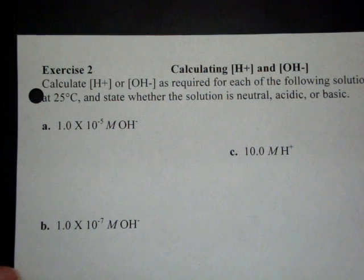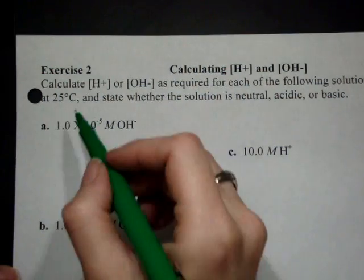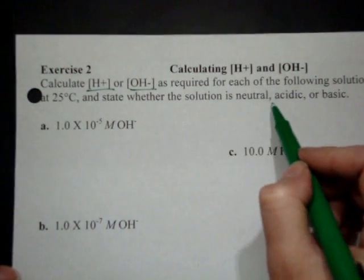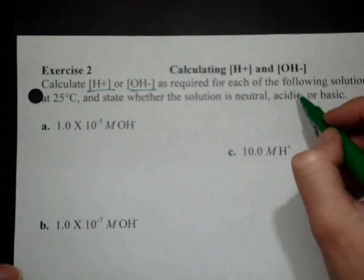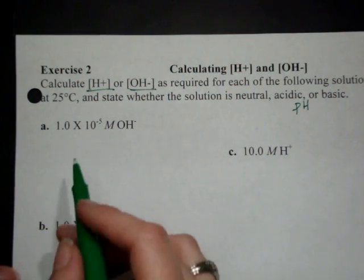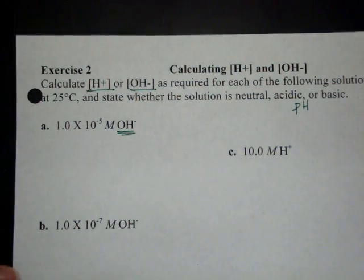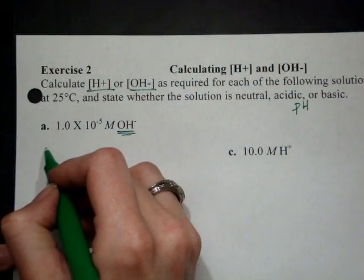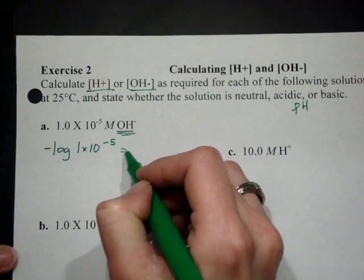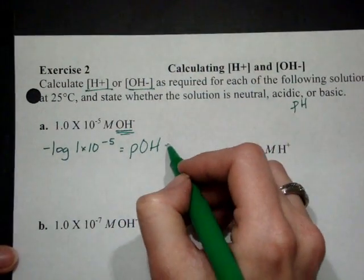Continuing on with pH, for exercise 2 where we're just calculating the values. We want to calculate the opposing concentration and then state whether it's acidic, basic, or neutral. So I'm going to go ahead and have us calculate the pH or the pOH as necessary. For this one, we're given 1 times 10 to the negative 5th hydroxide concentration. So if I take the negative log of that, that's going to give me the pOH, which is going to be negative 5.